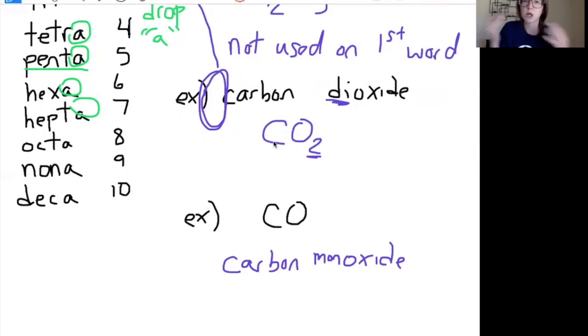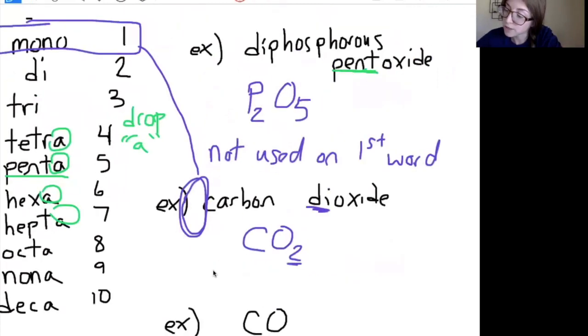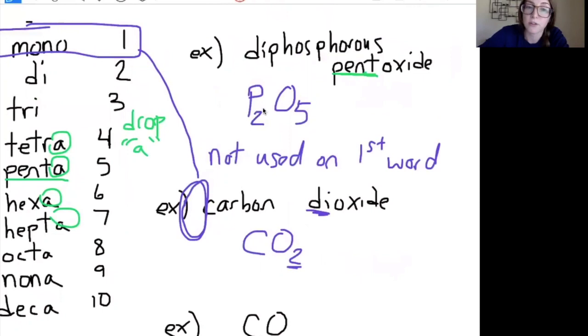You've now seen me go both directions. If there are prefixes, they become the subscripts. If there are subscripts, they become the prefixes other than mono for the first word. I do use a prefix for the first word if it's any number other than one.